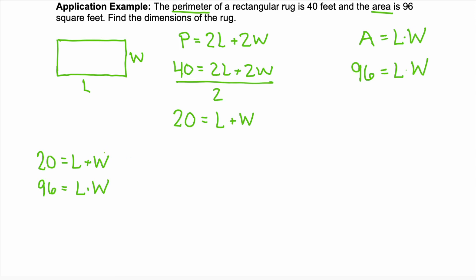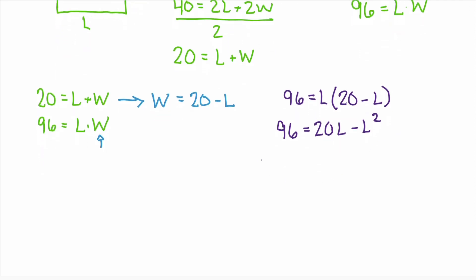I prefer to use substitution. So I'm going to rewrite my first equation in terms of w. Subtract l from both sides and you get w equals 20 minus l. I can substitute this into the second equation for w. So we'll have 96 equals length times 20 minus length. Let's distribute: 96 equals 20l minus l squared. Let's bring everything to the left hand side. So we'll add l squared and we'll subtract 20l.